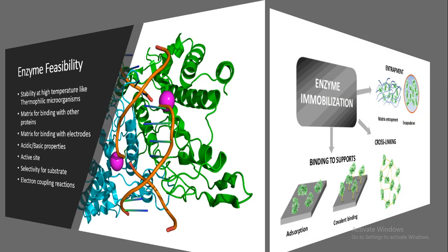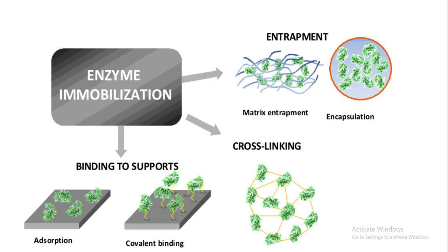Enzyme immobilization: we can use different methods such as binding the enzyme through adsorption or covalent bonding — covalent bonding being the most stable. We can also entrap the enzyme inside a matrix, use encapsulation, or use cross-linking of the enzyme.